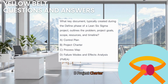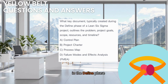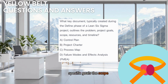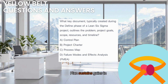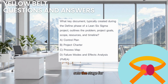The correct answer is B. Project Charter. The project charter is a foundational document developed right at the beginning, in the Define phase. Think of it as the project's contract — it clearly defines the business case, problem statement, specific goals, scope (what's in and out of the project), identifies team members and stakeholders, and sets out the initial timeline. It ensures everyone is aligned before significant work begins. A control plan sustains gains in the Control phase. A process map visualizes the workflow. And an FMEA assesses risks. A solid project charter sets the stage for project success.